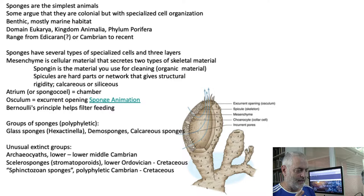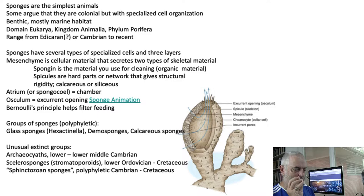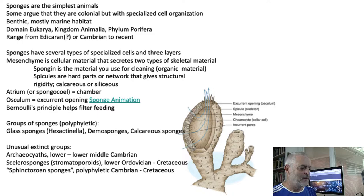They tend to have an opening at the top — something like Bernoulli's principle. If you have water flowing over the top of a sponge, it creates a vacuum within the atrium of that sponge. The atrium is the middle part, and the opening is called the osculum. Because of the current flowing over the top, it's a low pressure system — it draws water through the sponge. The animals with that specialized set of feeding cells are around holes around the perimeter, and they filter feed off forams, diatoms, anything they can possibly strain out of the water column.